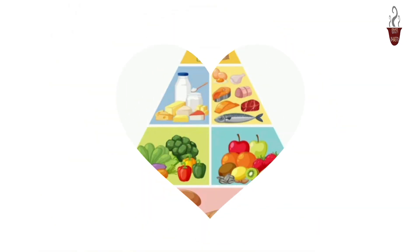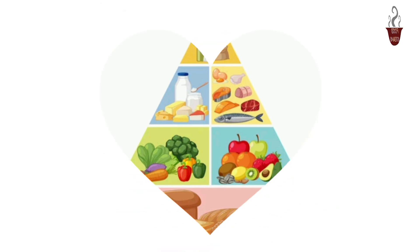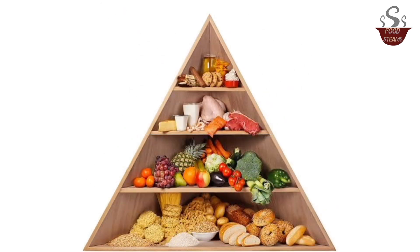The Traditional Food Pyramid is divided into several horizontal sections, each representing a different food group. Here's a brief explanation of each portion.